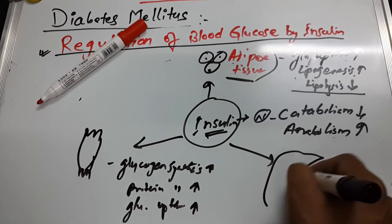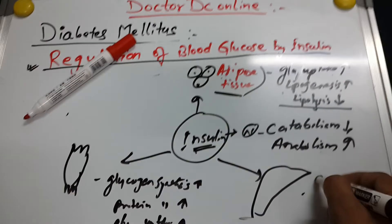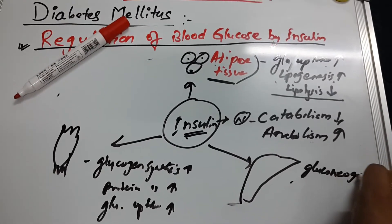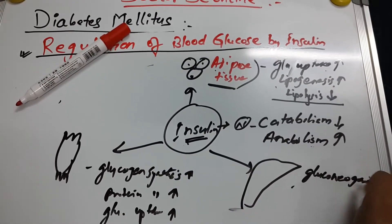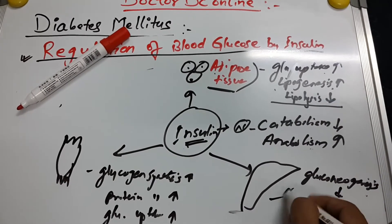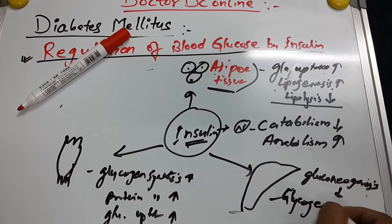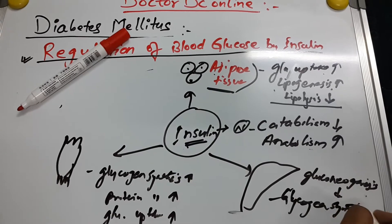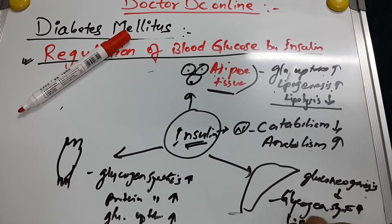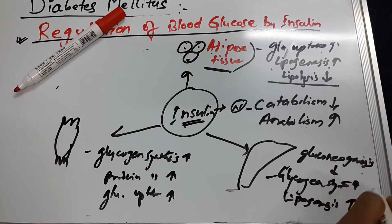In the liver, insulin decreases gluconeogenesis — meaning new glucose formation is reduced. Glycogen synthesis increases, and lipogenesis also increases.